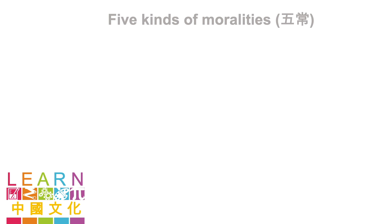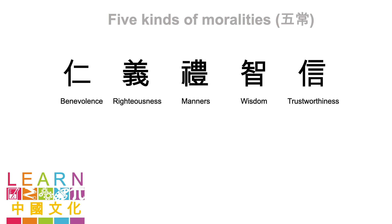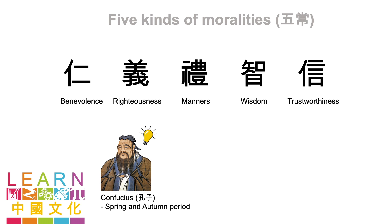Now that you have understood the importance of learning Chinese values, let me introduce you to the most well-known concept in my culture, which is the five kinds of moralities. In Chinese, we call it 五常. The five moralities include 仁 benevolence, 義 righteousness, 禮 manners, 智 wisdom, and 信 trustworthiness. The foundation of this idea was first proposed by Confucius, the philosopher we learned about in the fun fact quiz.